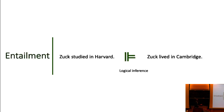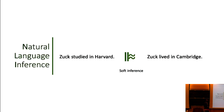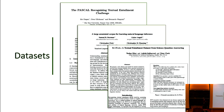Entailment, through example: if you have something like 'Zuck studied at Harvard,' does this logically entail that Zuck lived in Cambridge? Strict logical inference may not always be possible, there are always exceptions. So you can think of a softer version framed as natural language inference, where maybe a bunch of people would say there's a possibility that if somebody studies somewhere, they probably live there — but that's a softer version of the same question.